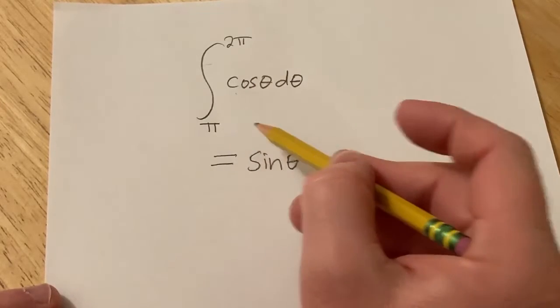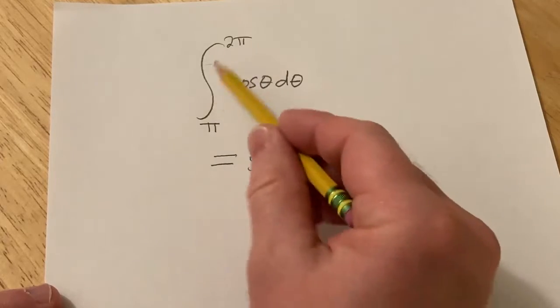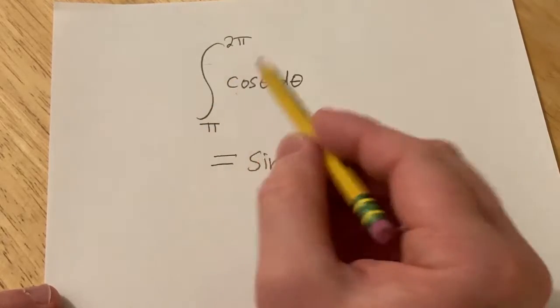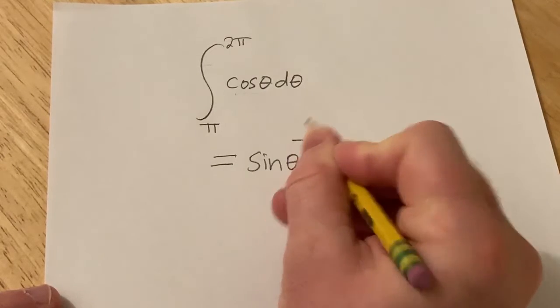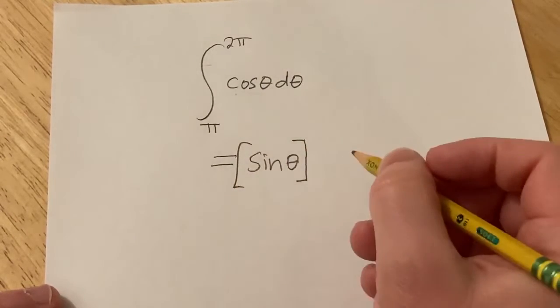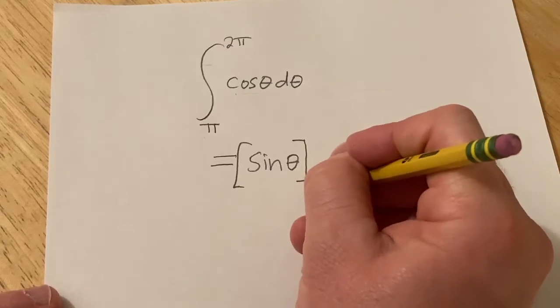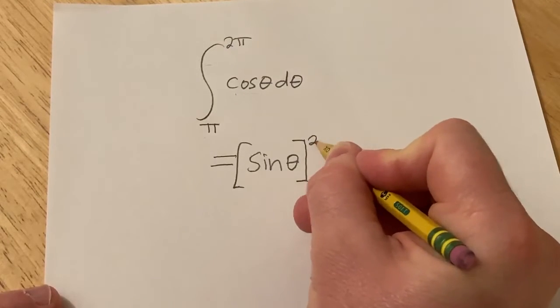Now this is a definite integral so we don't need the plus c but we do need to write these numbers here. These are called the limits of integration. So you can write a line or a bracket or if you prefer you can even use two brackets, it's up to you. And the pi goes here and the 2pi goes here.